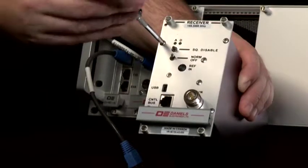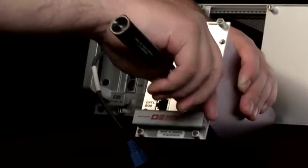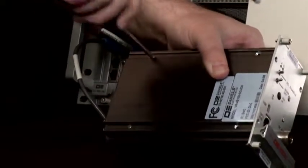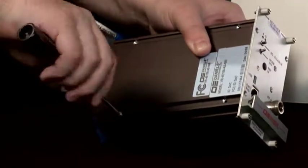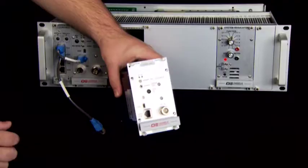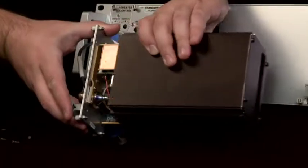Removing the cover of the receiver requires four Phillips screws to be removed from the front panel of the receiver as well as two Phillips screws from the side of the receiver. Two screw holes on the side of the receiver are not used. Slide the cover off of the receiver.